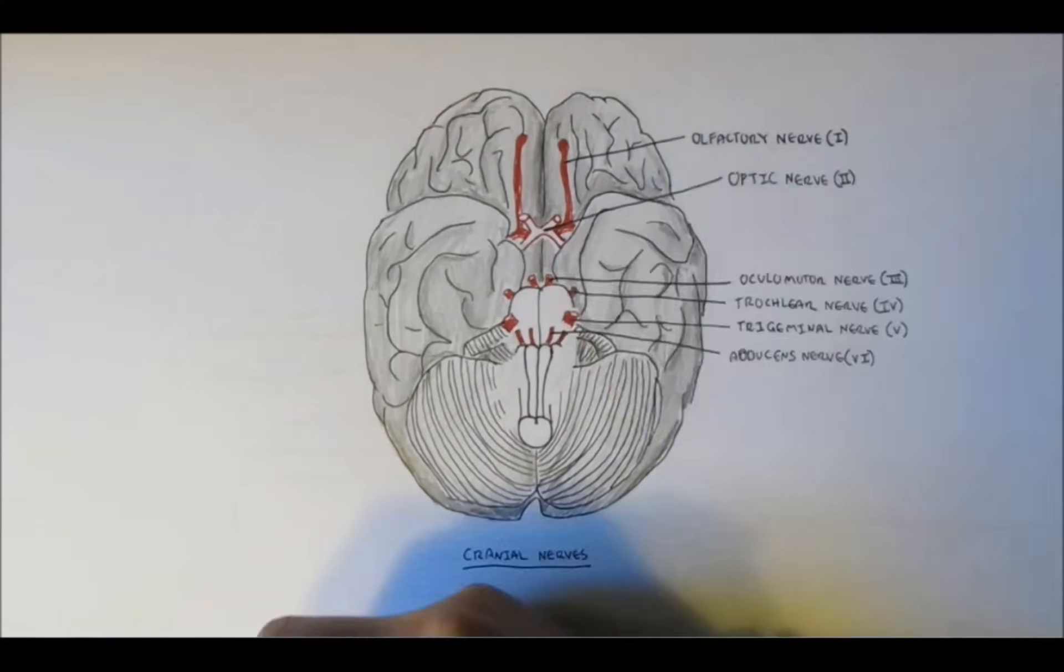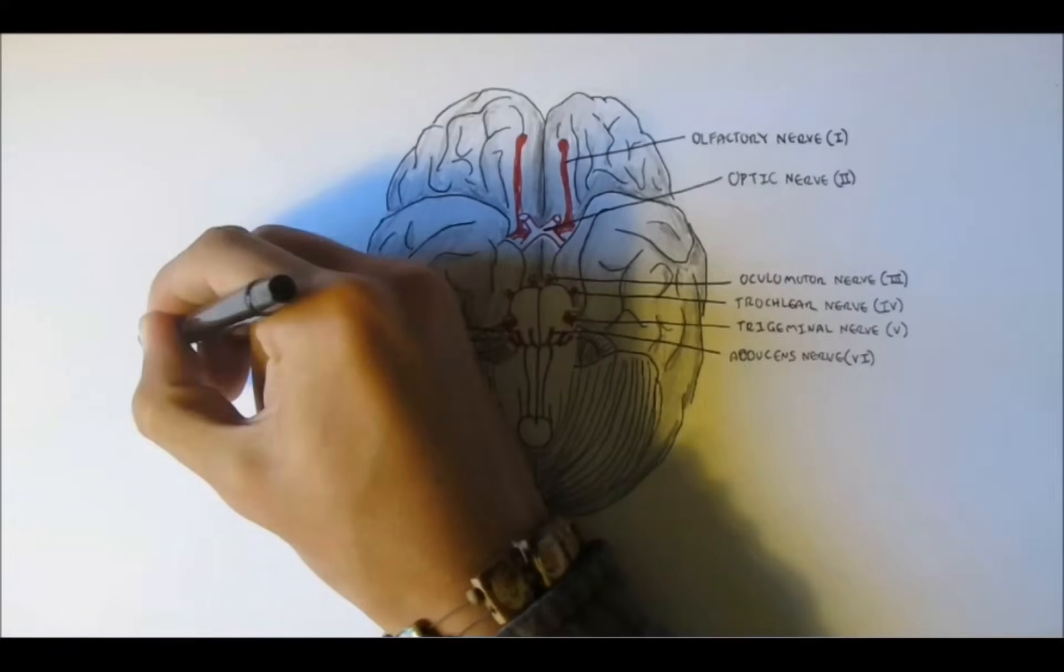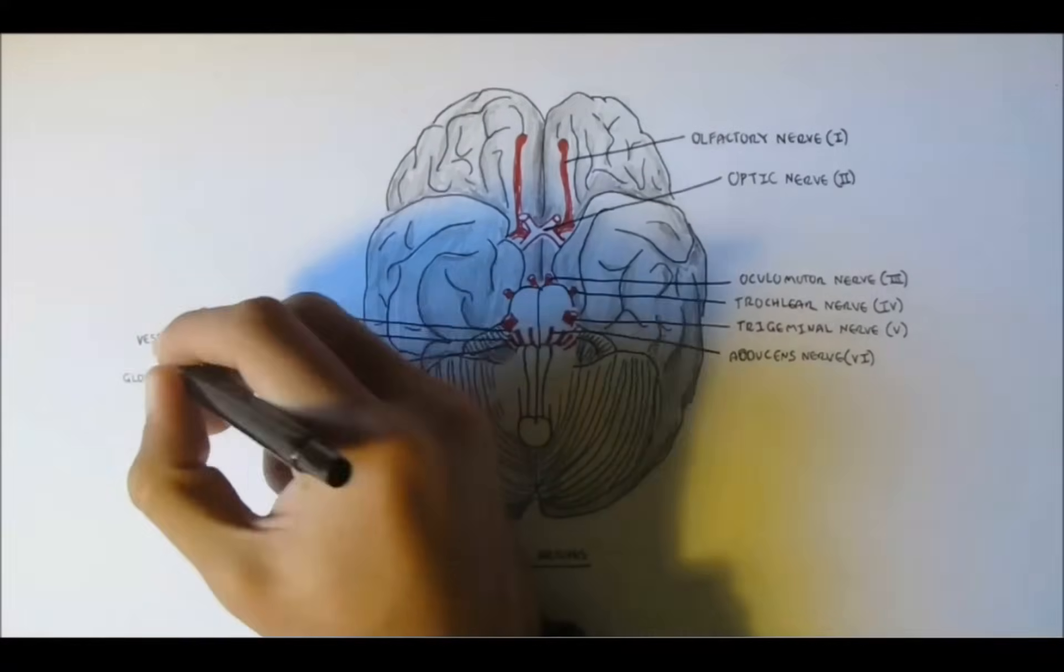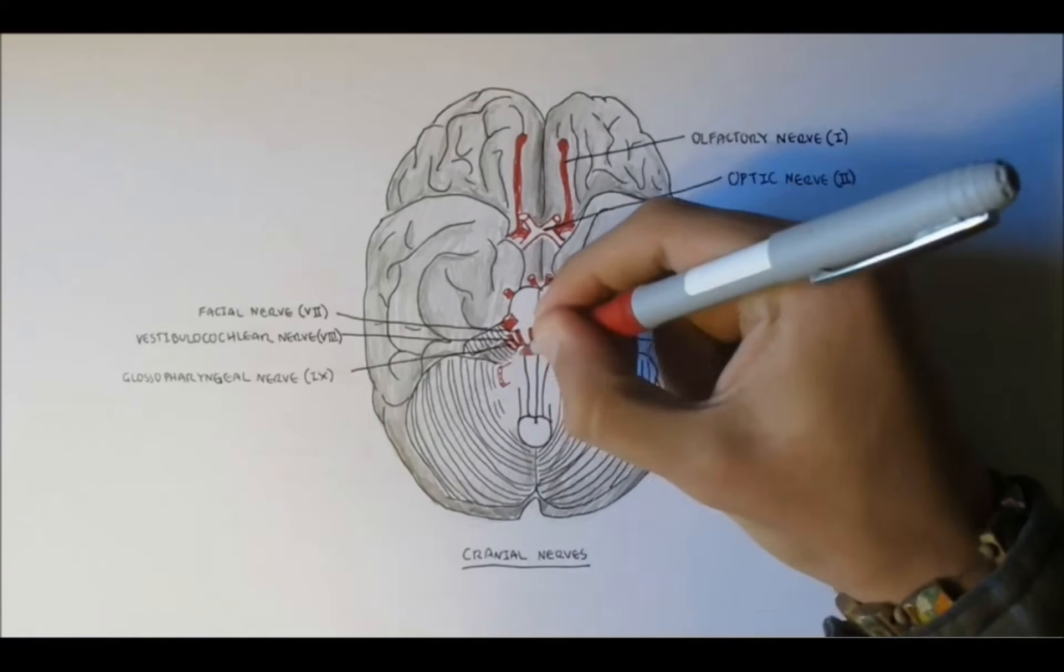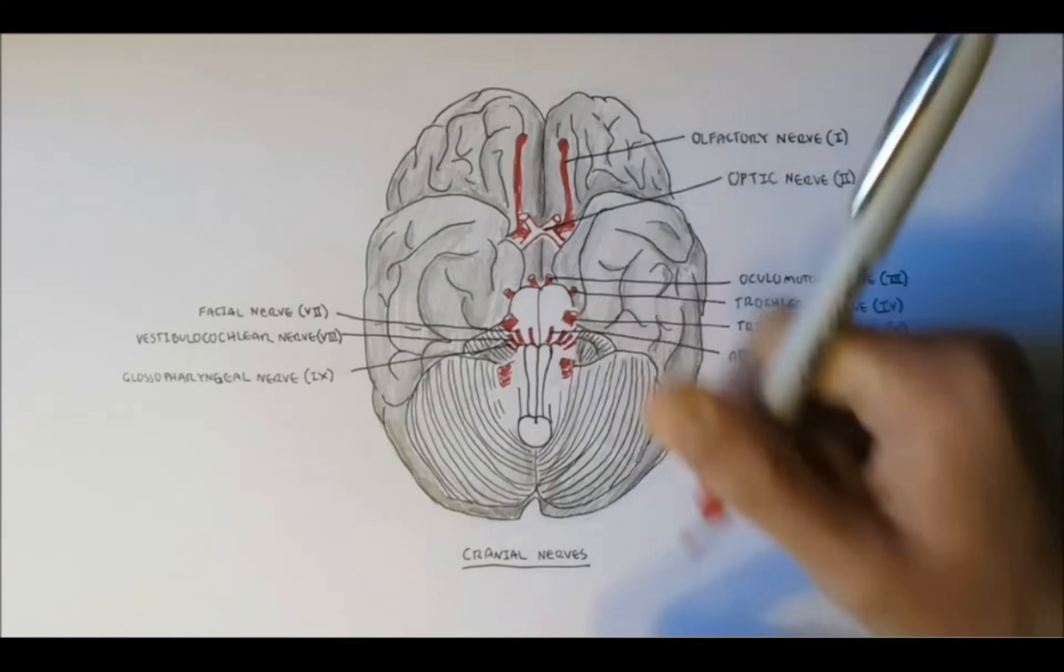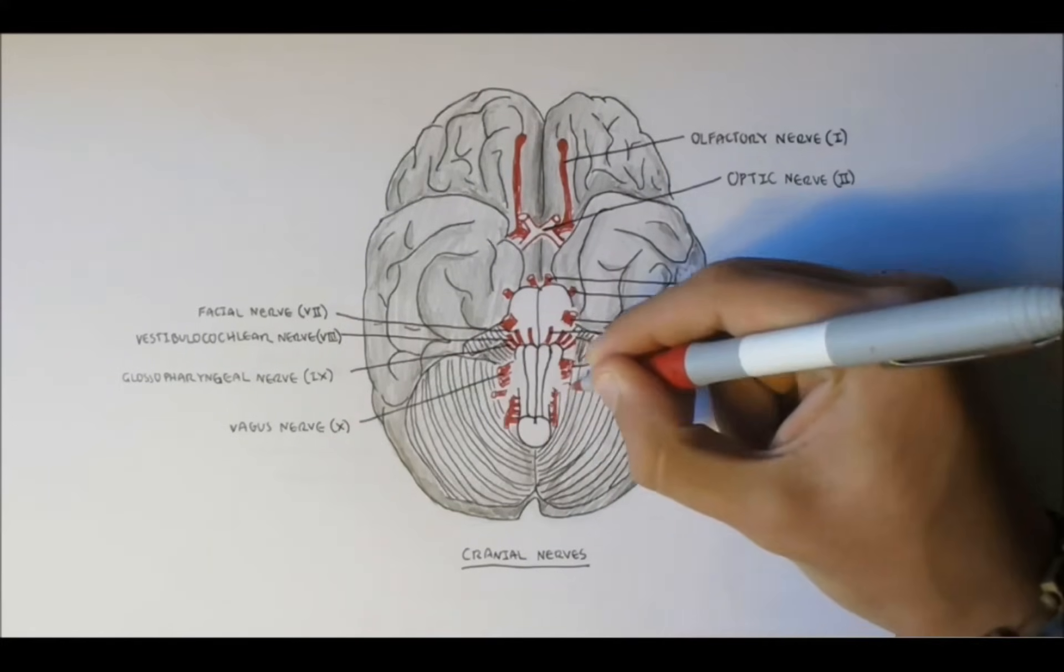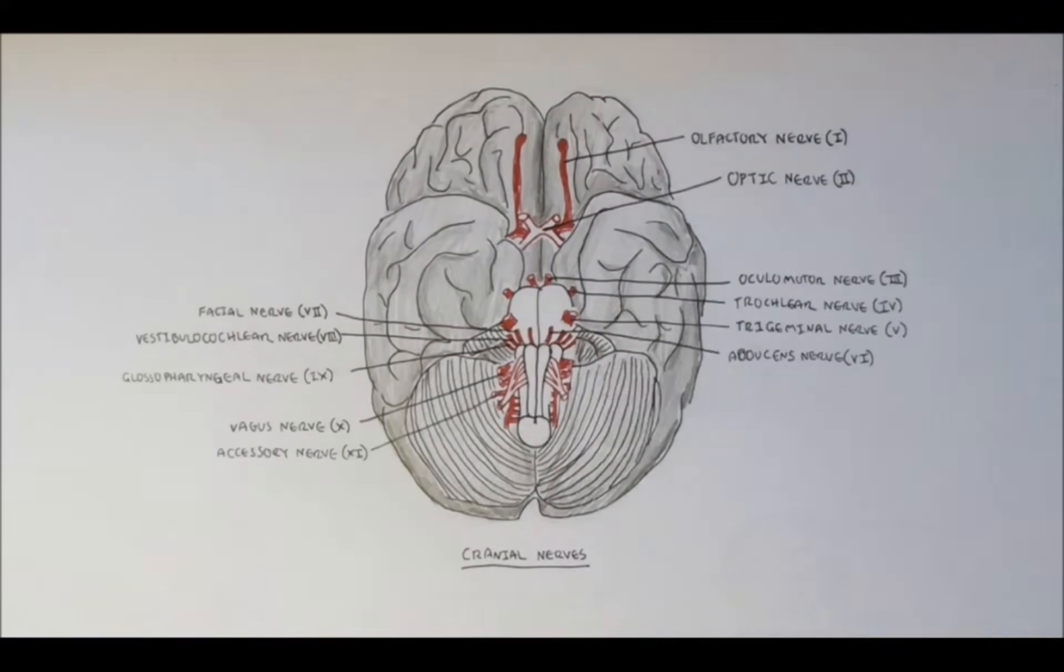Nerve 7 is the facial nerve. Nerve 8 is the vestibulocochlear nerve, also known as the acoustic nerve. Nerve 9 is the glossopharyngeal nerve. Nerve 10, the vagus nerve. Nerve 11, the accessory nerve. And nerve 12, the hypoglossal nerve.